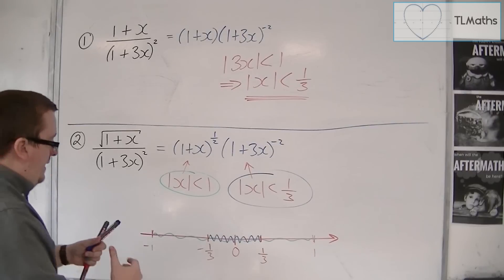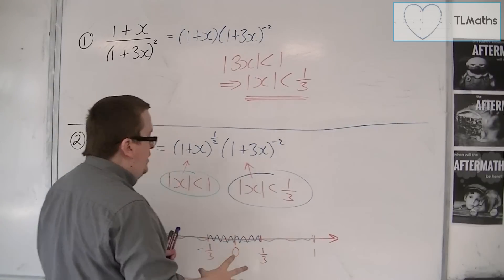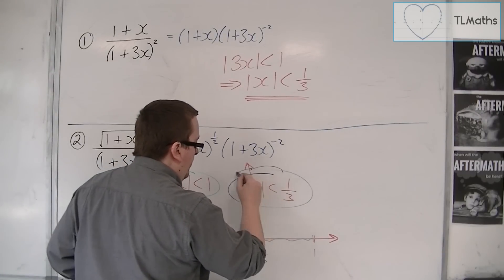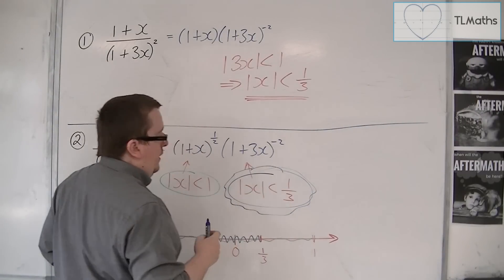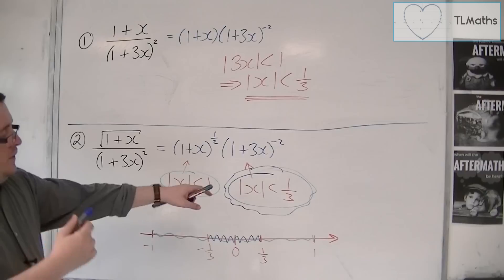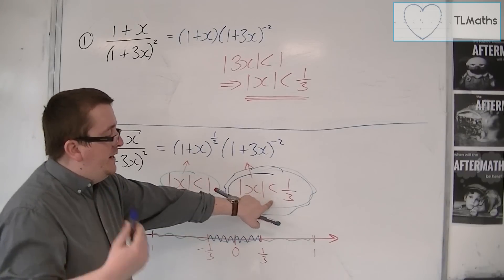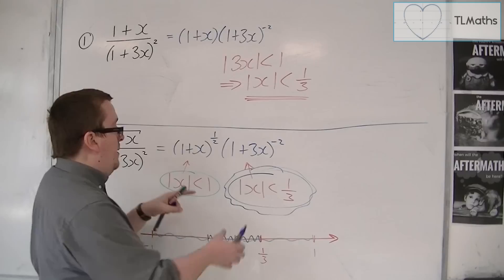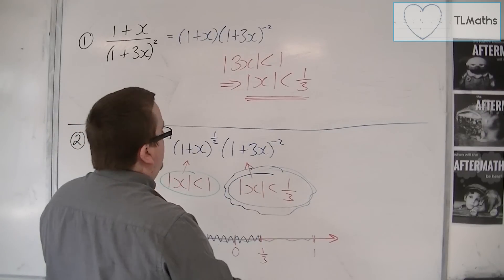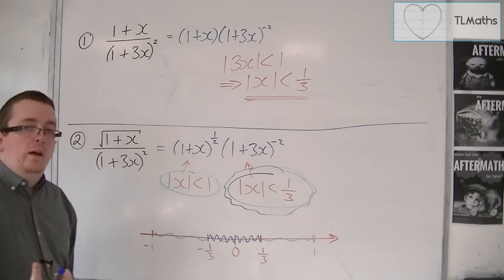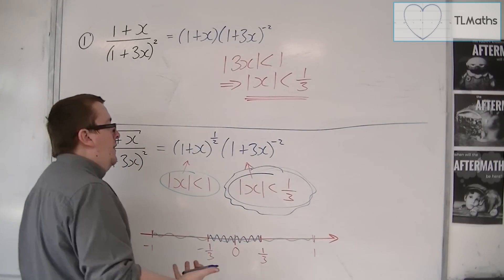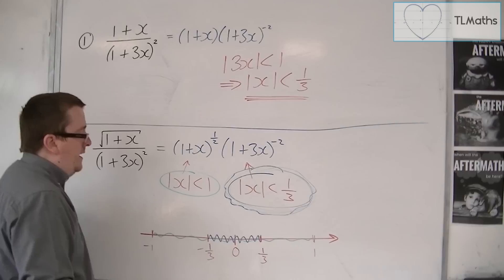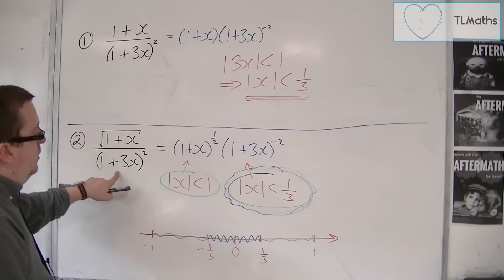So ultimately, the range of values for which this is valid is actually just this. It is the inequality where the number on the right-hand side, as long as they're both mod x is less than, it's the number on the right-hand side which is the smaller. It is that one that is actually the range of validity for this whole fraction.